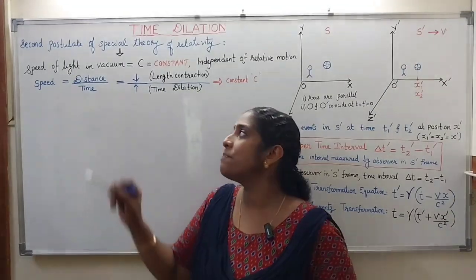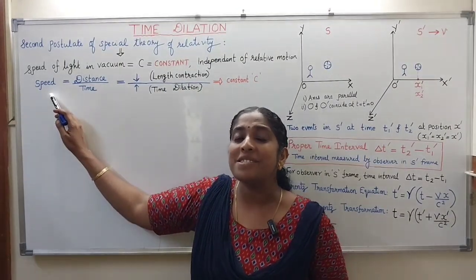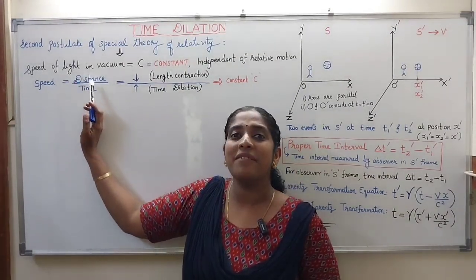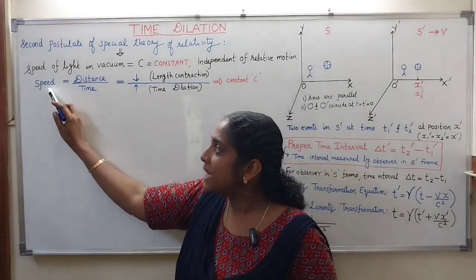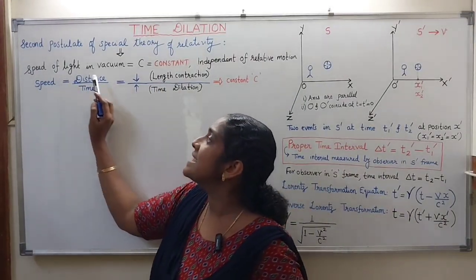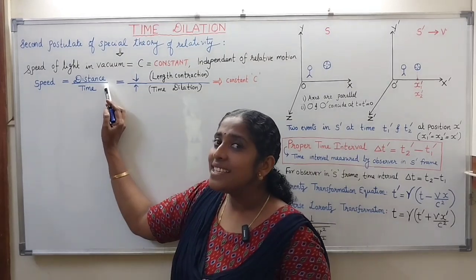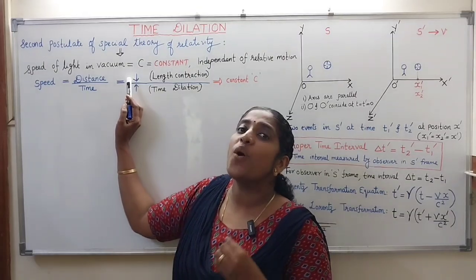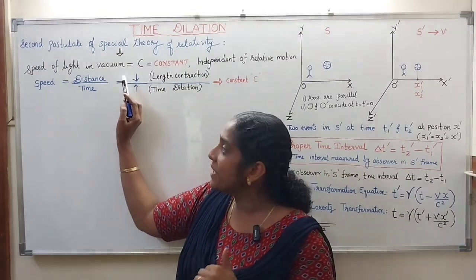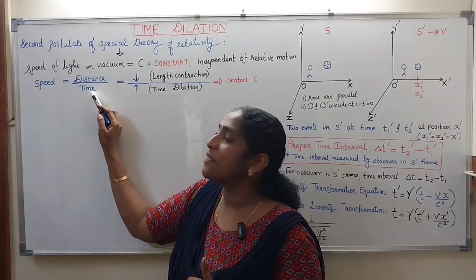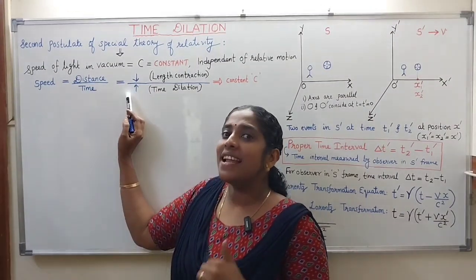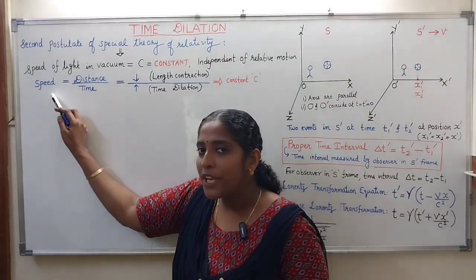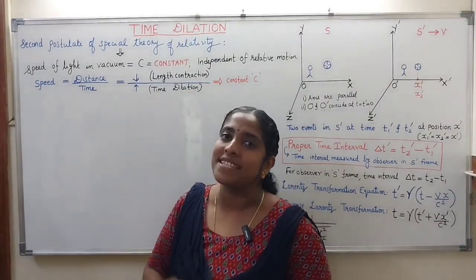To keep the speed of light constant, some adjustment is required in distance and time, because speed is distance traveled divided by time taken. To keep the speed constant, the length contracts. At the same time, the time interval increases. This lengthening of the time interval to keep the speed of light constant is known as time dilation.